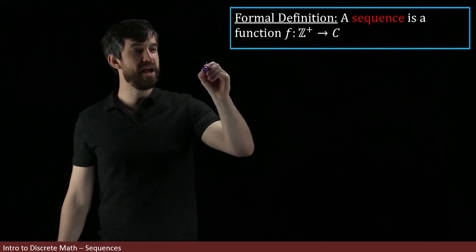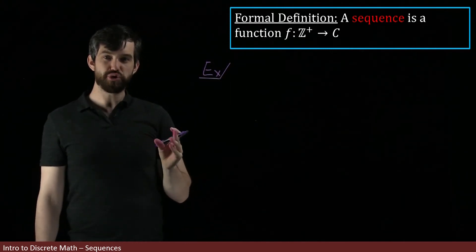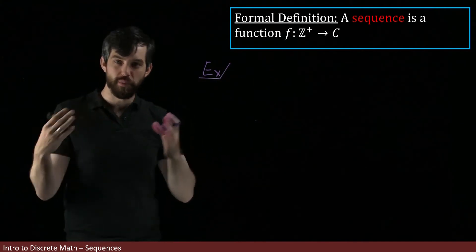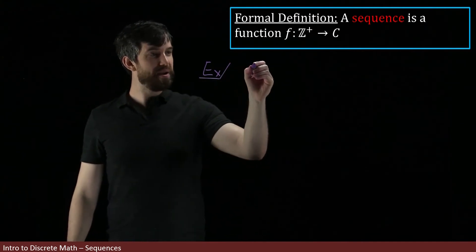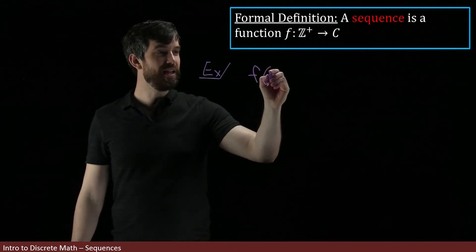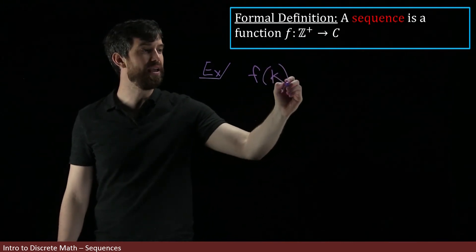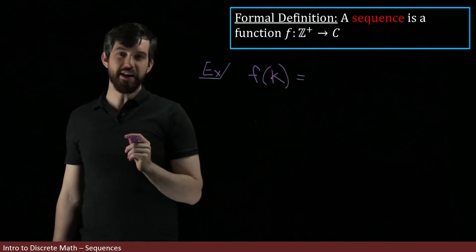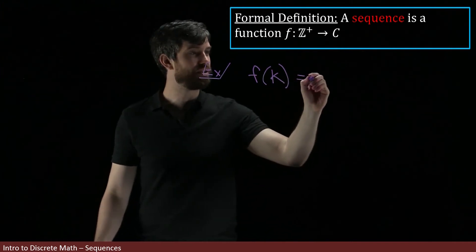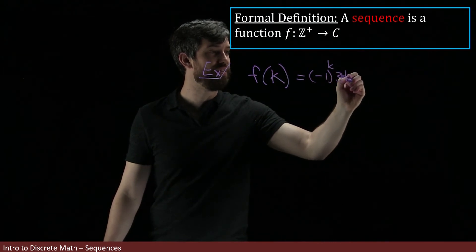So as an example, let's take the one we just looked at. If I wanted to describe it in this language, the language of a function with a domain and a codomain, what I'm going to say is that I have a function f, and it inputs things inside of my domain, so it's going to input some k. And then I have to tell you what it does to the k. Well, it does precisely what we just saw: it's got that (-1)^k times 3k. This could be an example.